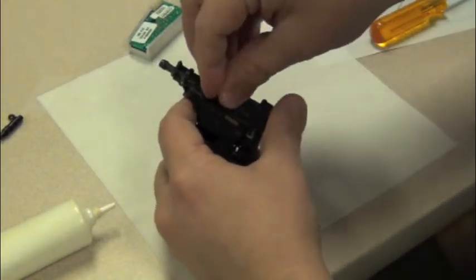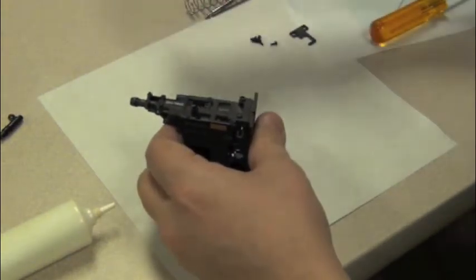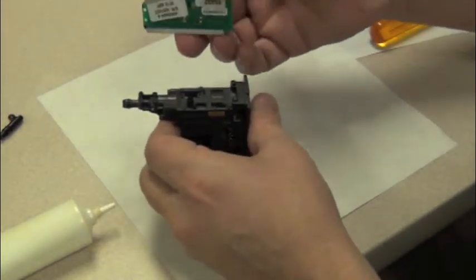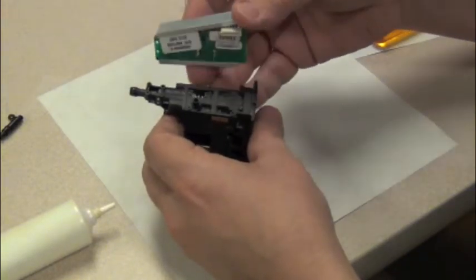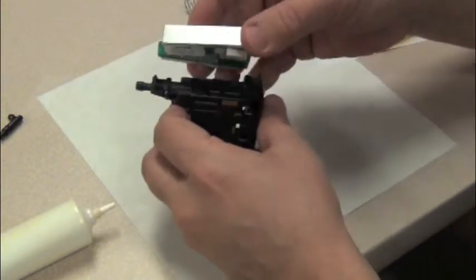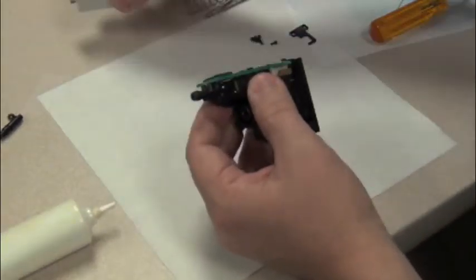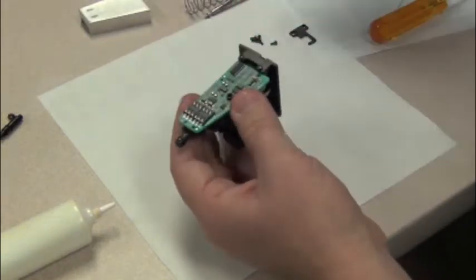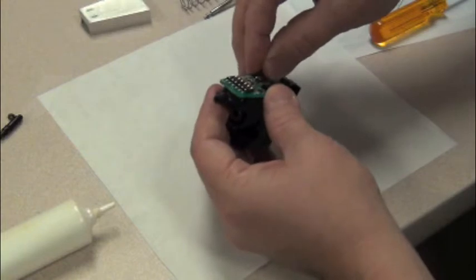Replace the silencer. Take the spindle PCA and removal tool and carefully insert the four pins into the four holes in the valves. Slide the tool out. Place the three screws back in the spindle PCA.